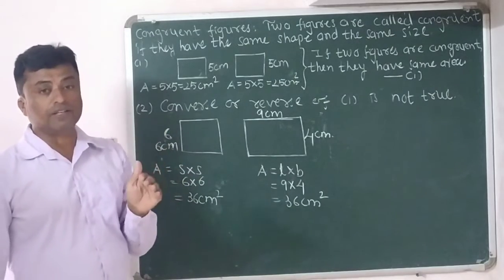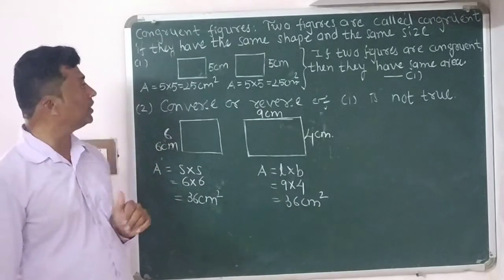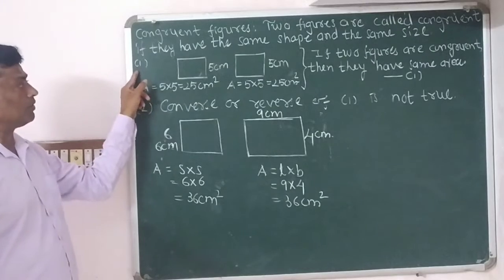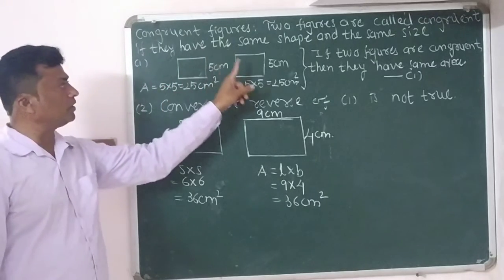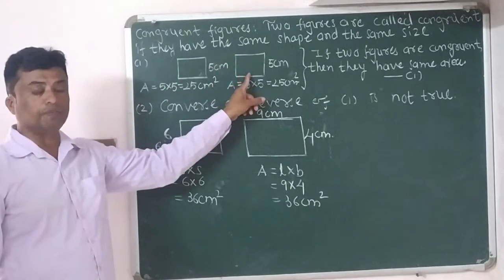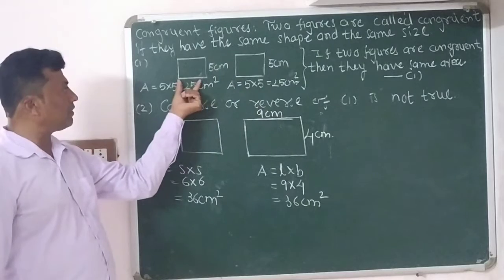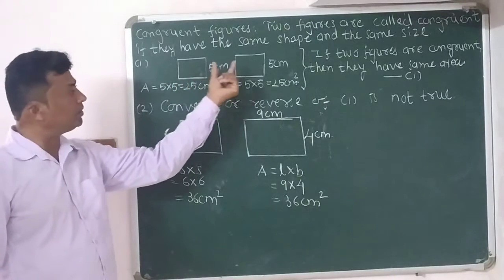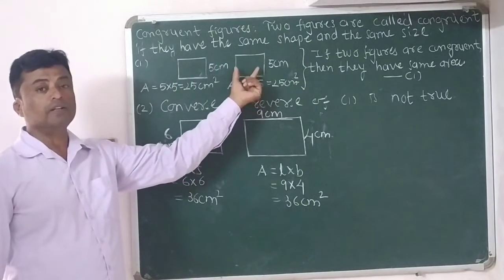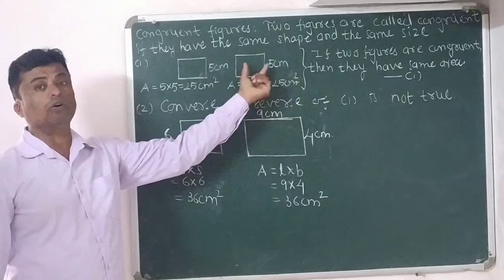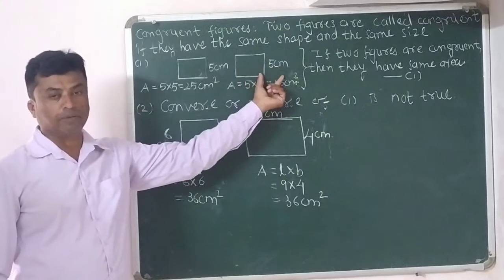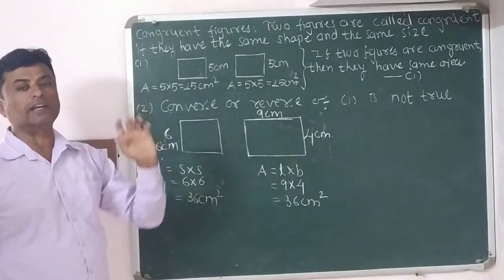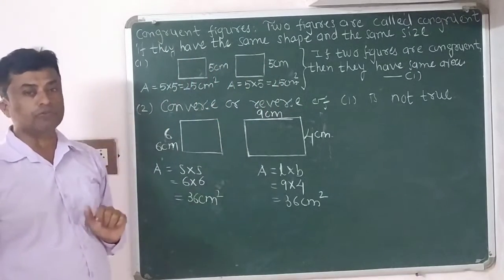Now we will discuss area of congruent figures. Question number one: this is figure number one and this is figure number two. It is a square with side length 5 centimeters. It is also a square with side length 5 centimeters. So both are squares and their side length is 5 centimeters.